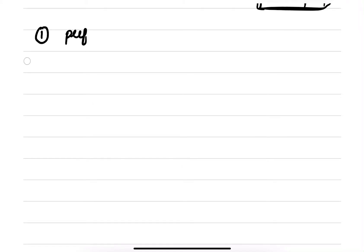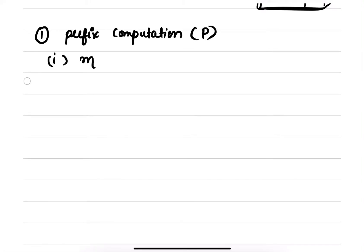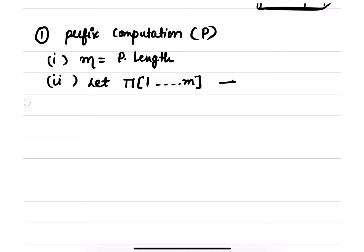There will be two functions. The first function is prefix computation. In prefix computation, the input is just the pattern. Let's say m is equal to the pattern length. What we do is define a new array from 1 to m — a new array that is nothing but the prefix table.